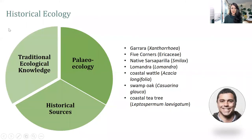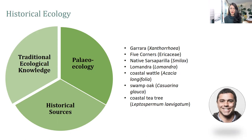This brings us to the third piece of the historical ecology approach, which we're still actively working on. In talking with my colleague Shane Ingro, who has long, deep connections to the land, many of the traditional plants that were used and are still used by Indigenous communities today actually reflect the pollen record quite well, suggesting that there is a lot of insight to be gleaned from traditional ecological knowledge for informing conservation.